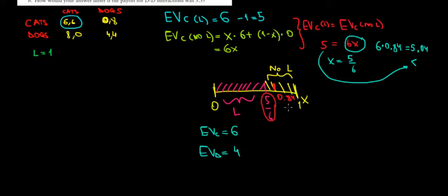But the question is what happens here when we have no lenses. Here we have the risk. We have to take into account the probability of meeting dogs and cats together. We saw that the expected value of a cat on this range when she does not invest in the lenses is 6x.